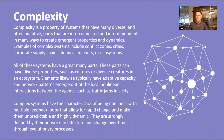All of these systems have a great many parts — they're diverse, such as cultures or diverse creatures in an ecosystem. They likewise typically have adaptive capacity, and networked patterns emerge from local interactions between them, such as traffic jams in a city. No one's planning that; it's just the interaction between all the people in their cars.